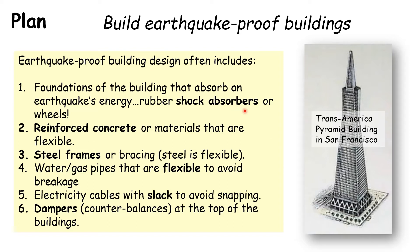Often rubber shock absorbers are put into the base of buildings, or even wheels, so that if the building is separated from the ground it's standing on, it can absorb the impact of the earthquake. Don't just use concrete — reinforce it, make it strong, or use flexible materials that move with the shaking, such as steel frames, because steel can bend rather than shatter. Have water and gas pipes that are flexible to avoid breakage, electricity cables with slack so they won't snap, and finally counterbalances — large weights at the top of buildings so when the building sways one direction the counterbalance swings the other, keeping it upright.